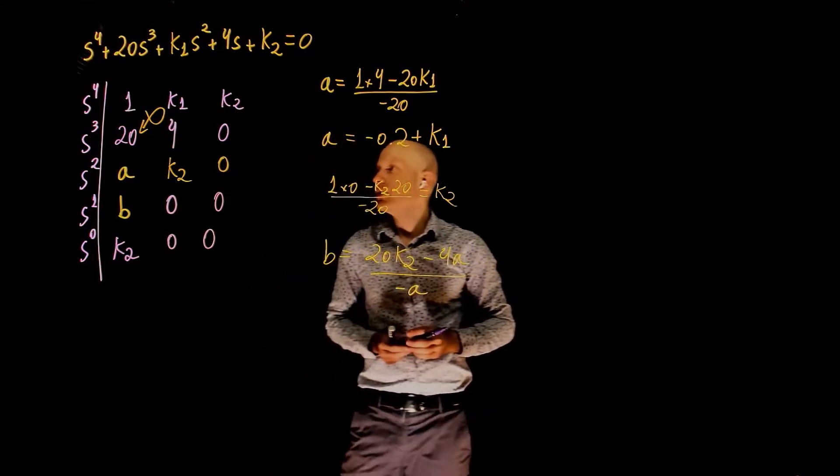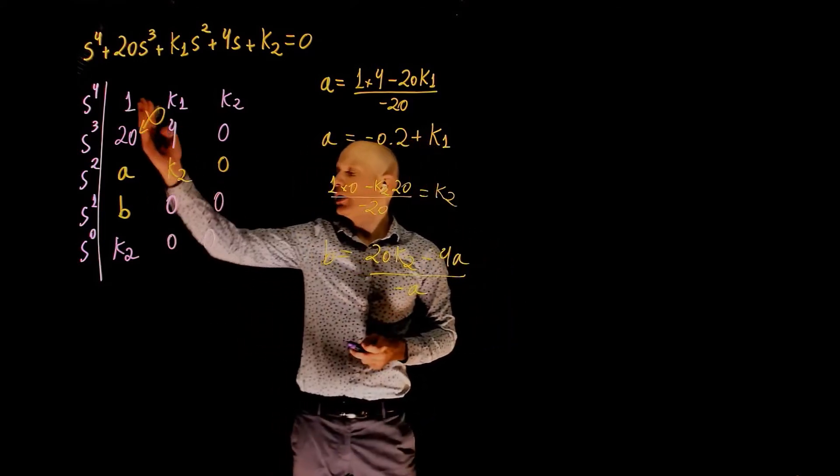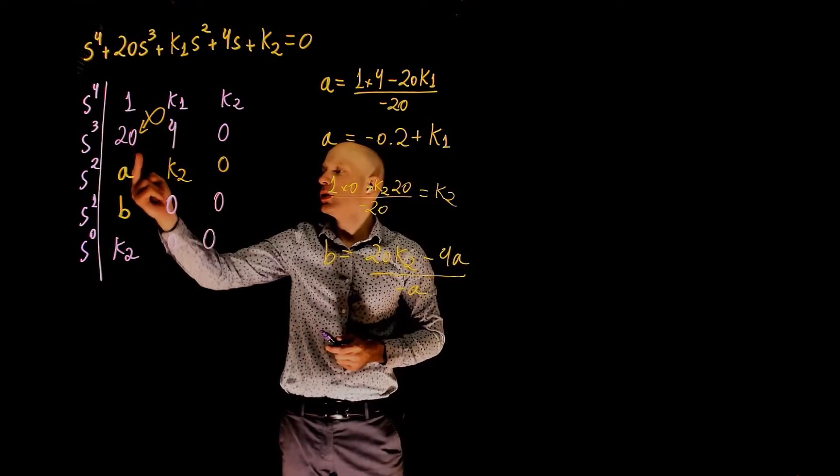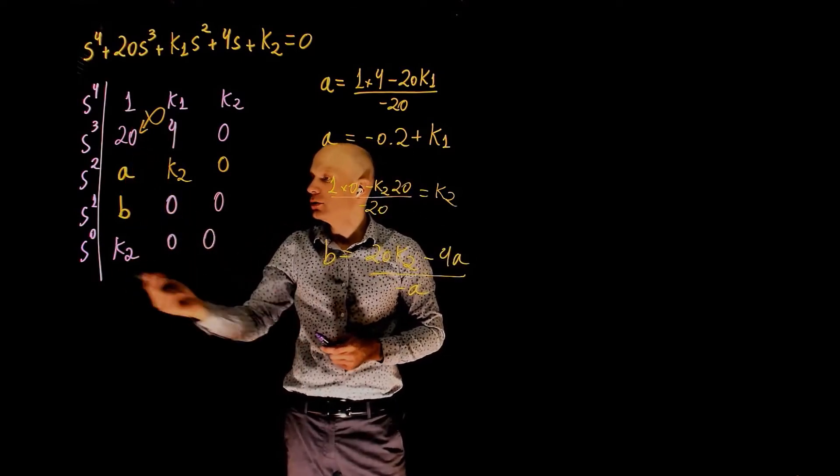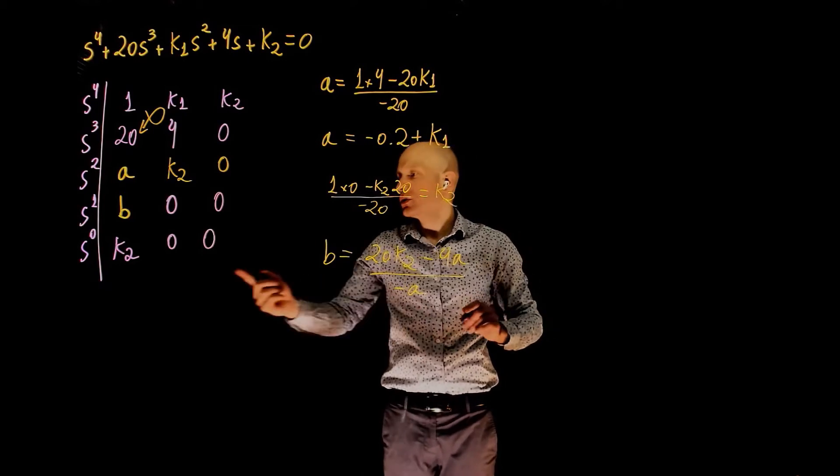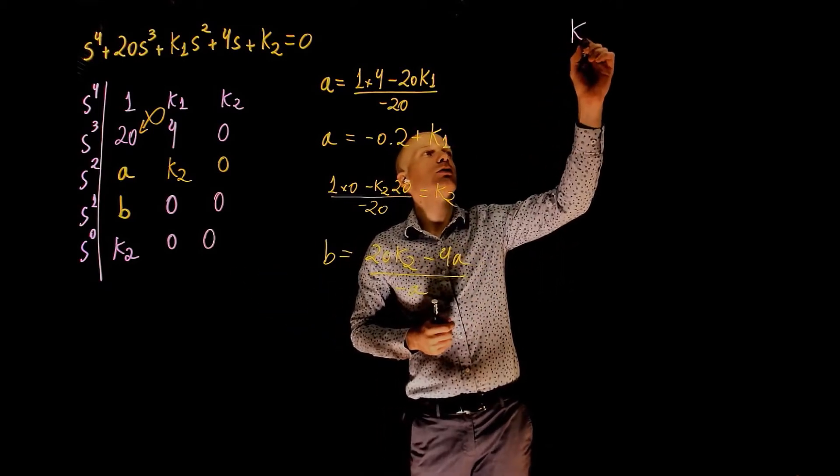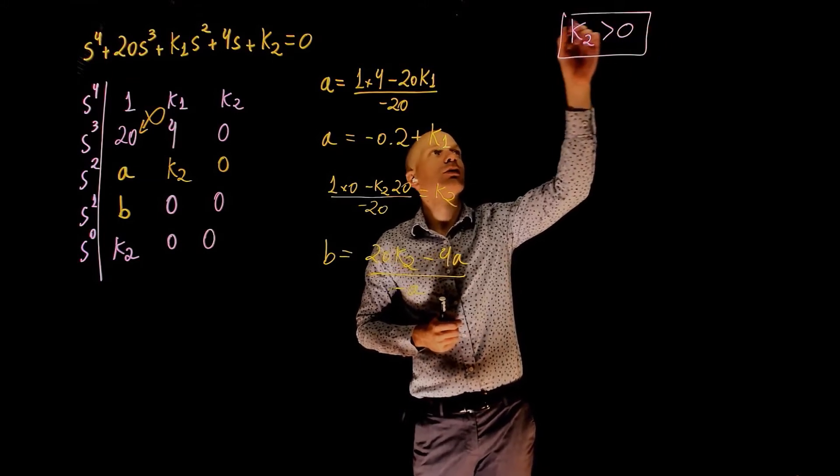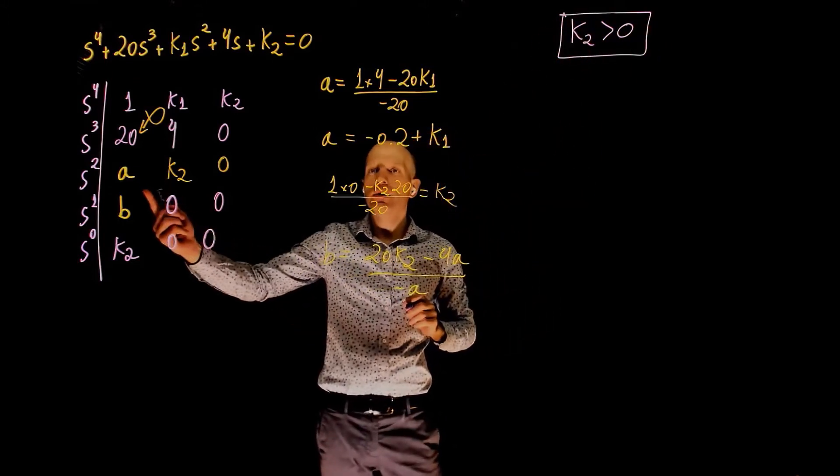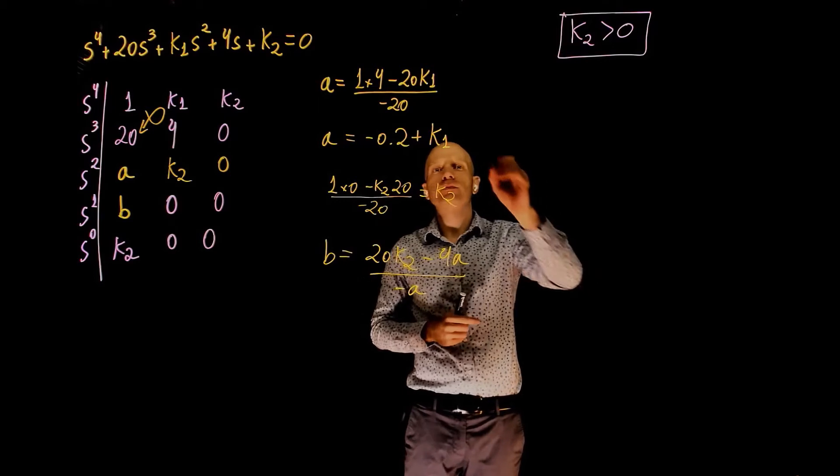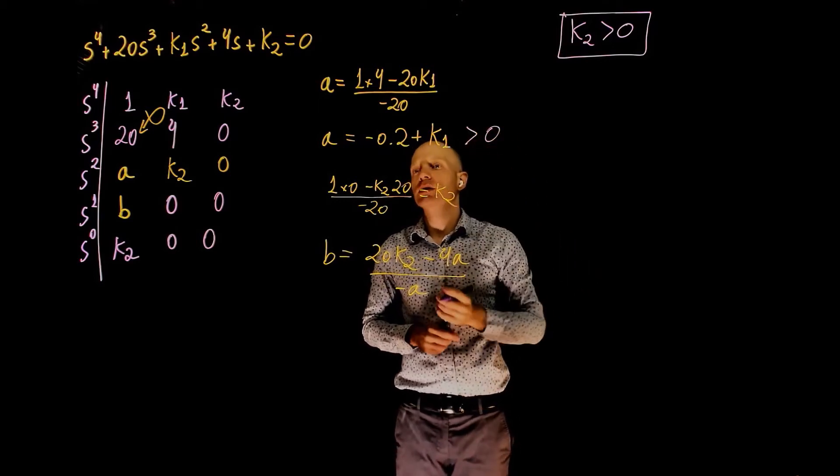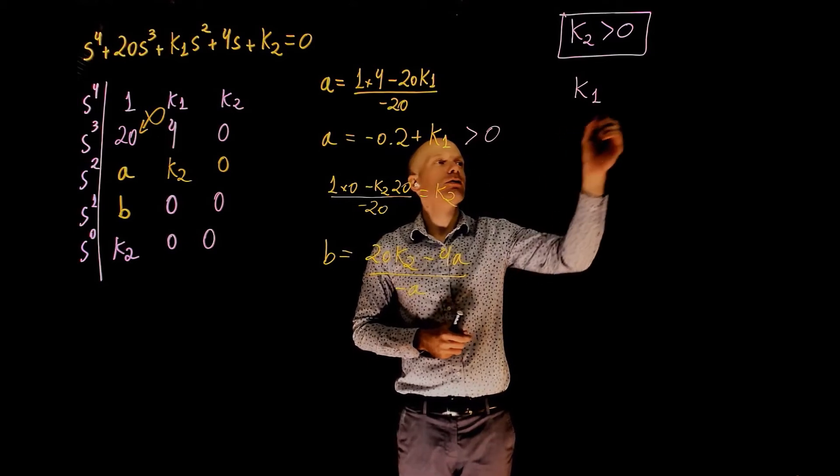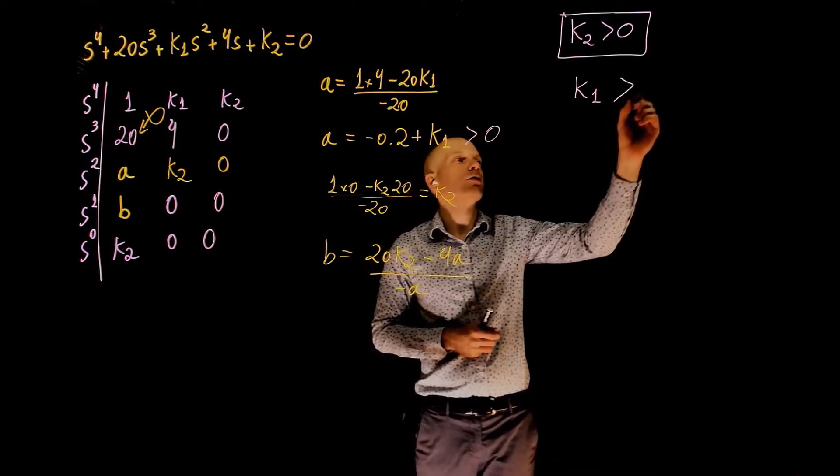Now we can analyze the stability of this system. We want the entire column here to have the same sign. Because you have positive 1 and positive 20, we need a, b, and k2 to be greater than 0. So, k2 needs to be greater than 0, that's the first condition. We need a to be greater than 0, which means that k1 needs to be greater than 0.2.